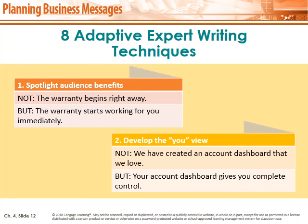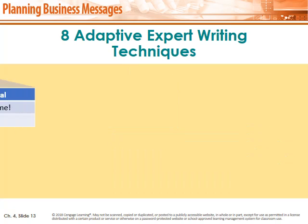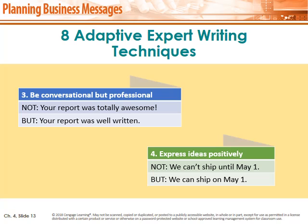Eight adaptive expert writing techniques. Number one: spotlight audience benefits. For example, instead of writing 'the warranty begins right away,' write 'the warranty starts working for you immediately' — stressing the benefit to the receiver. Number two: develop the 'you' view. Always focus on 'you.' For example, 'your account dashboard gives you complete control.' Number three: be conversational but professional. Don't write 'your report was totally awesome' — that's informal. Instead write 'your report was well written.' Number four: express ideas positively. Write 'we can ship on May 1st' rather than 'we cannot ship until May 1st.' Although both convey the same meaning, how you write it shows your professionalism.